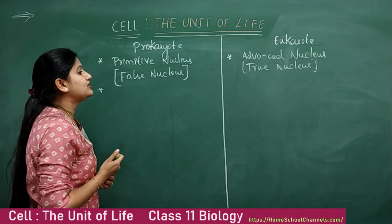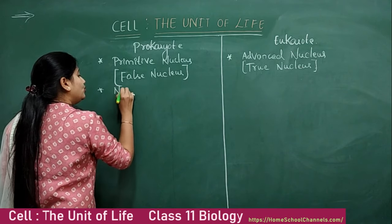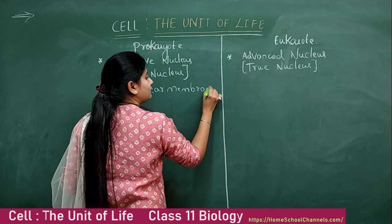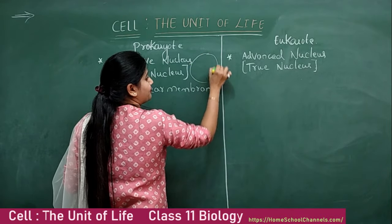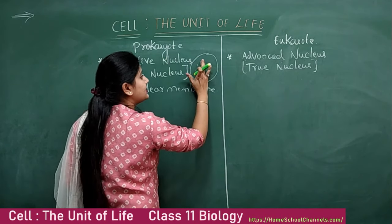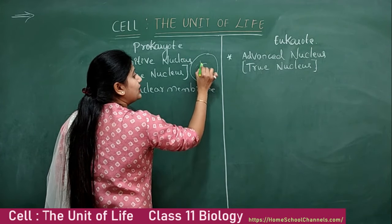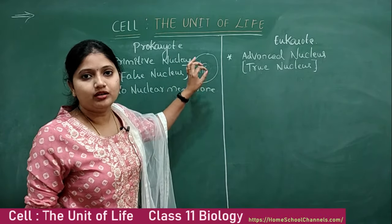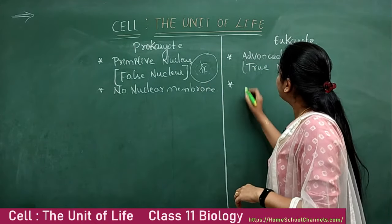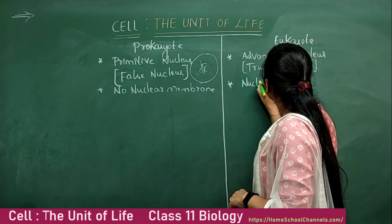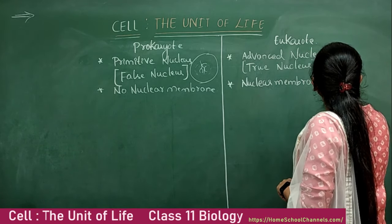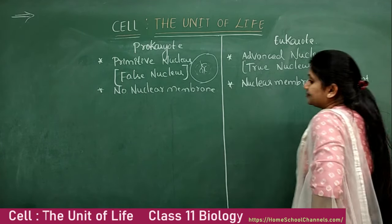In prokaryotes there is no nuclear membrane, so the genetic material — the DNA — is freely suspended in the cytoplasm. In eukaryotes, the nuclear membrane is present. This is the second difference regarding the nuclear membrane.